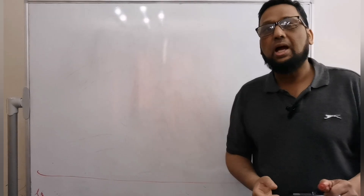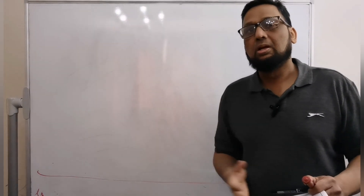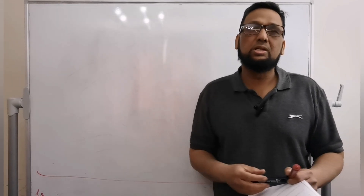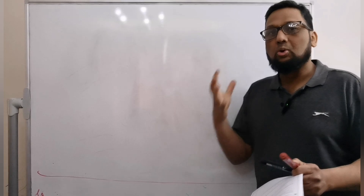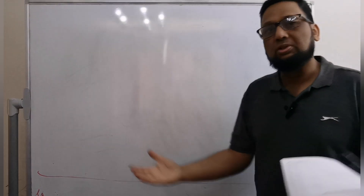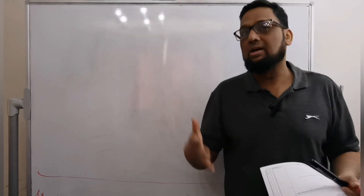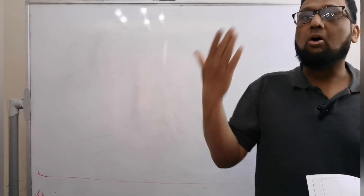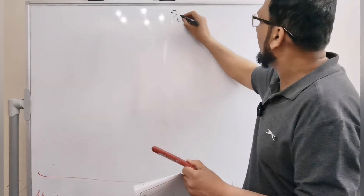Hi guys, my name is Mohammed and today I'm going to solve one of the questions for the CSSE exam which came in 2021. Let's go to the topic: the question is based on the perimeter. Perimeter means you need to find and add up all the sides, whether it's a square, rectangle, or triangle.